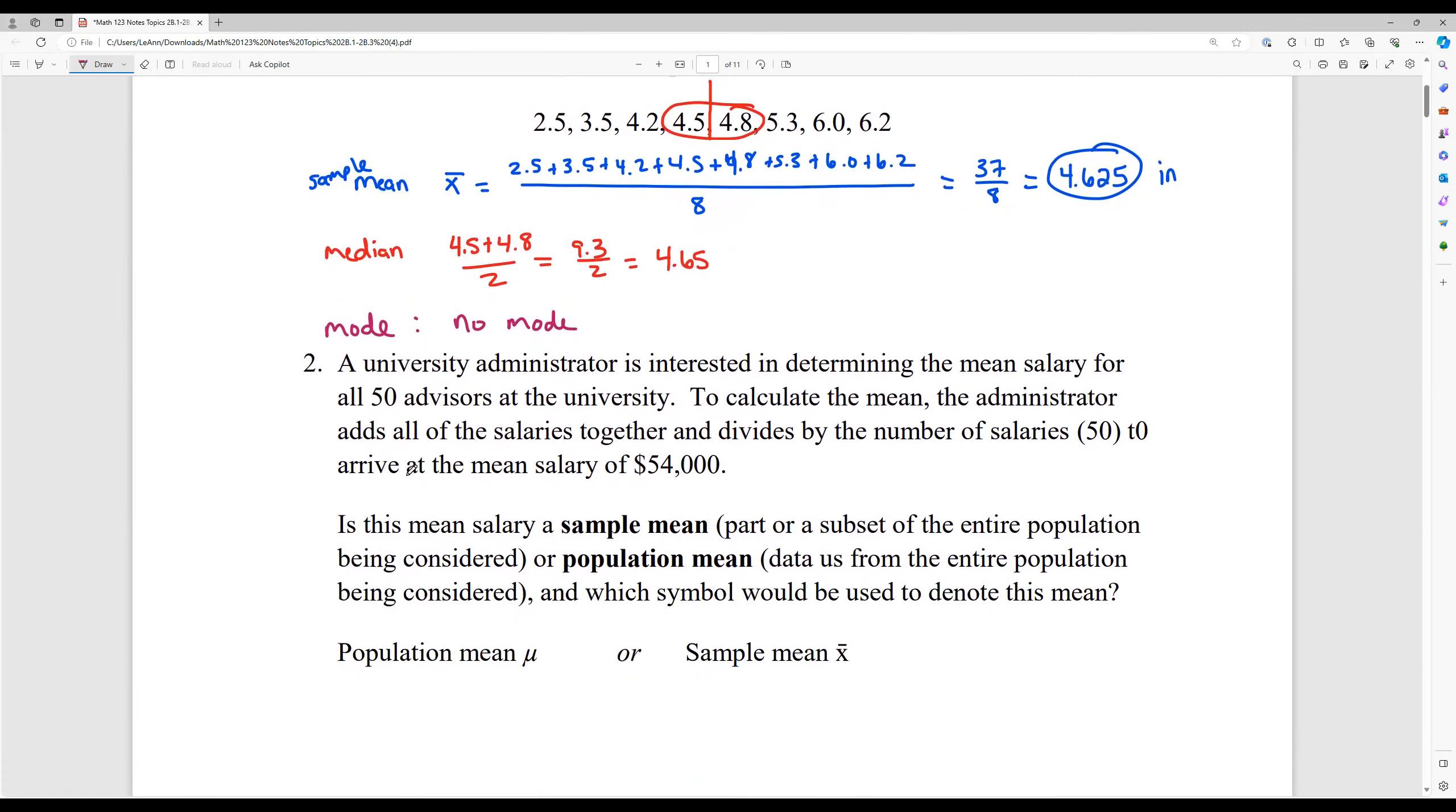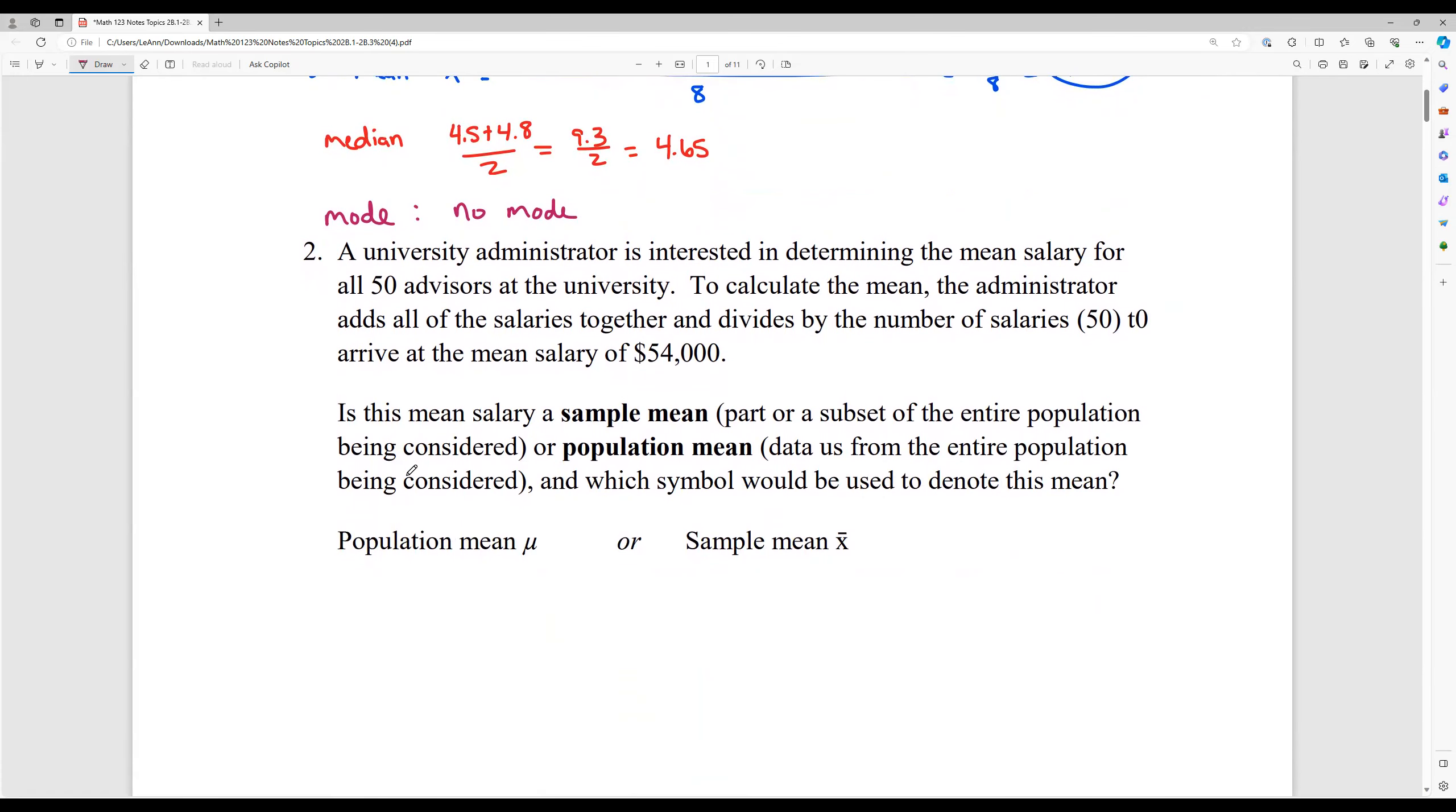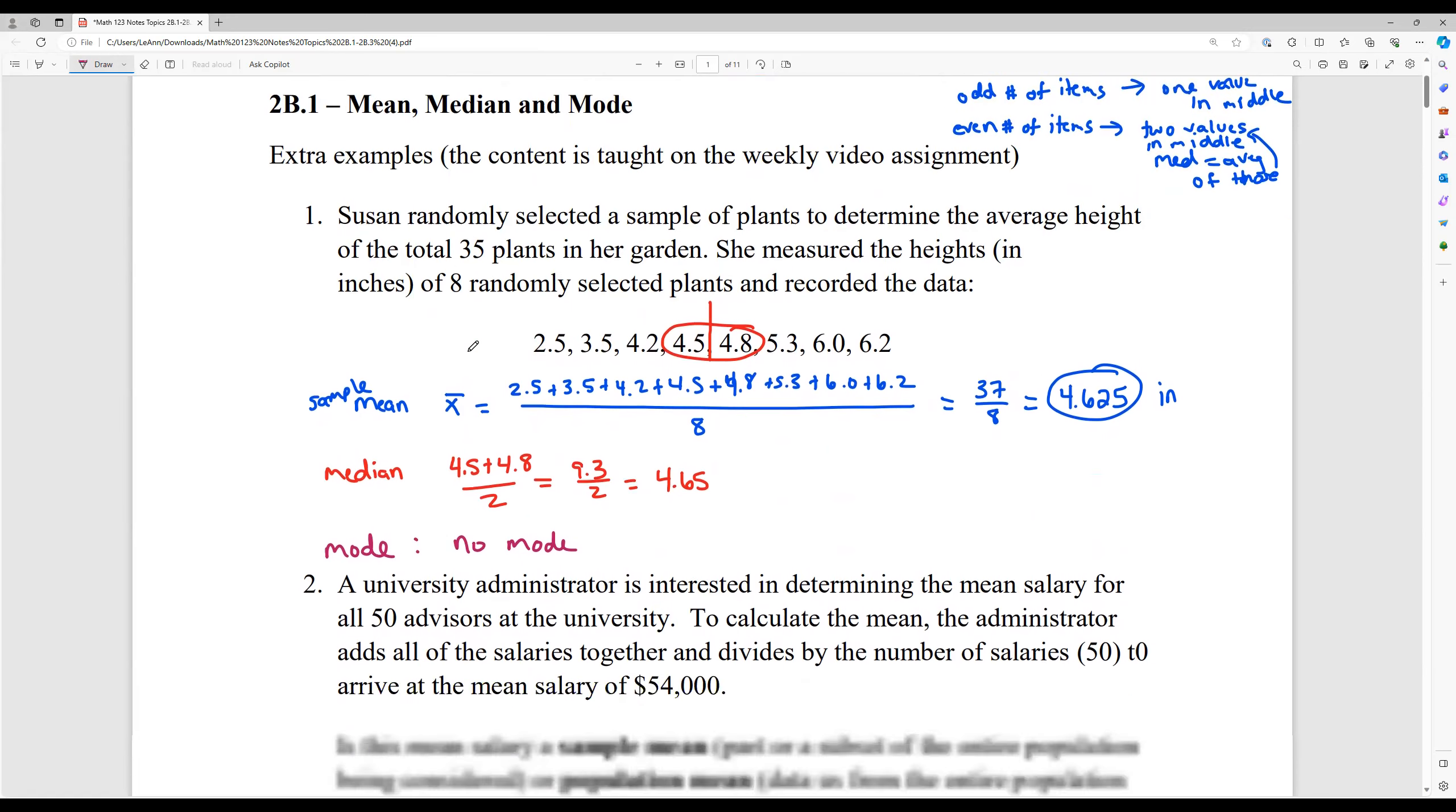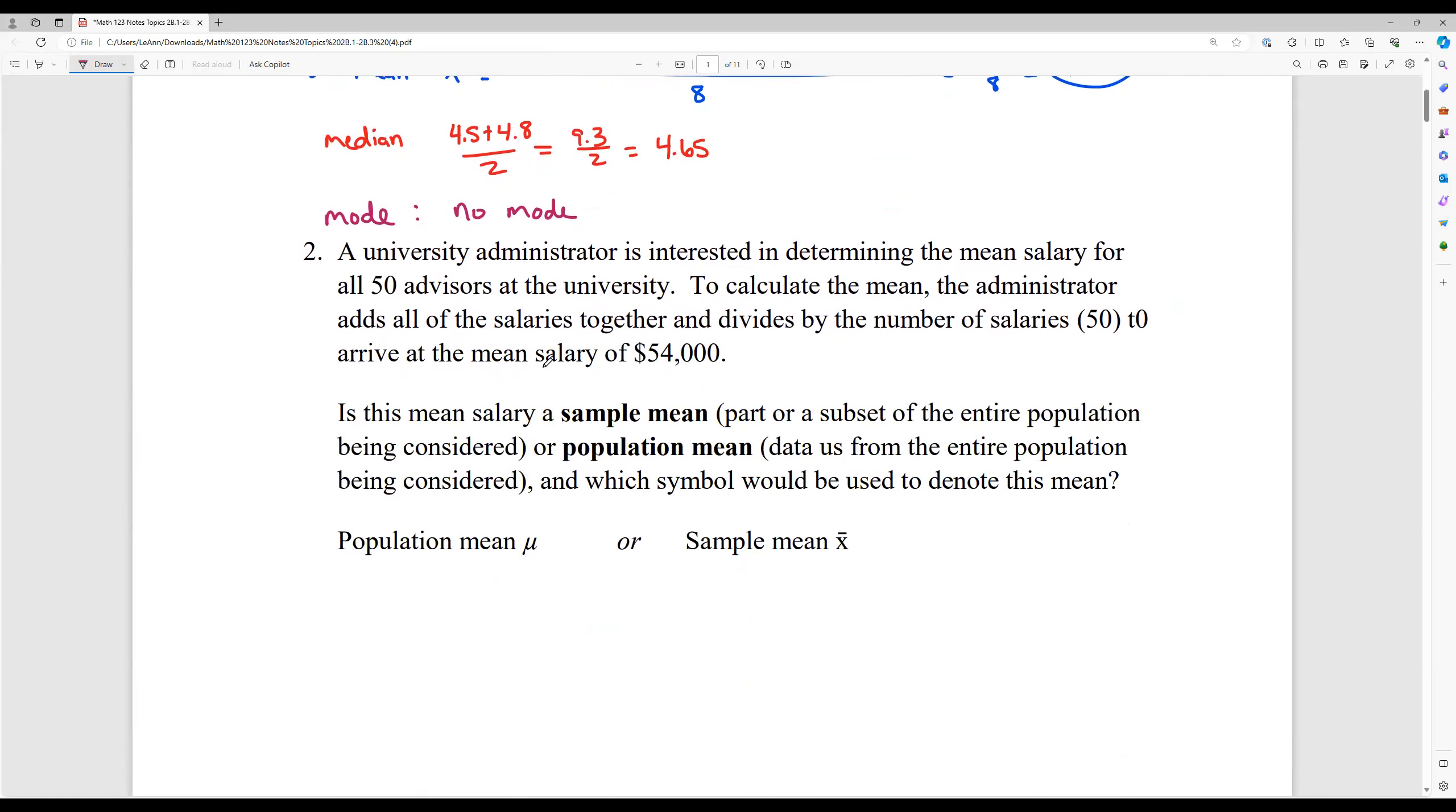Now, another type of question you'll see in that homework for 2B.1 is they're going to sometimes ask you about whether or not something is a sample mean or a population mean. Remember we talked about how this one was a sample mean because she did not use all 35 plants in her measurements. She just used eight of her 35 plants. So she took a sample or a subset of the whole entire garden.